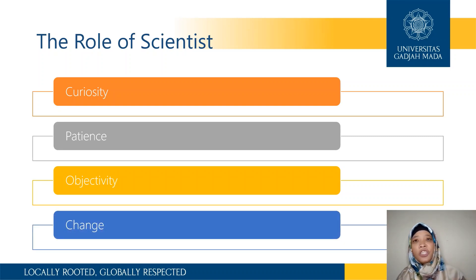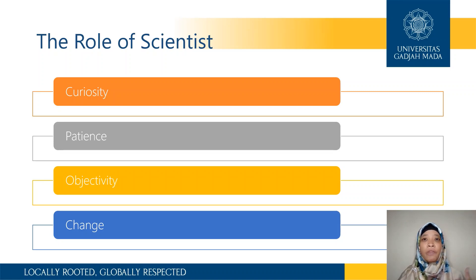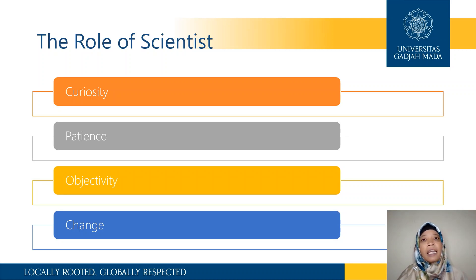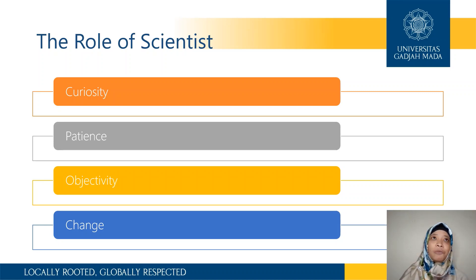And then there is openness to change. We have to be very open-minded to change because, as I said, even theory can change across times or across cultures. As a scientist, the acceptance of change is one of the most important characteristics that we have to have.